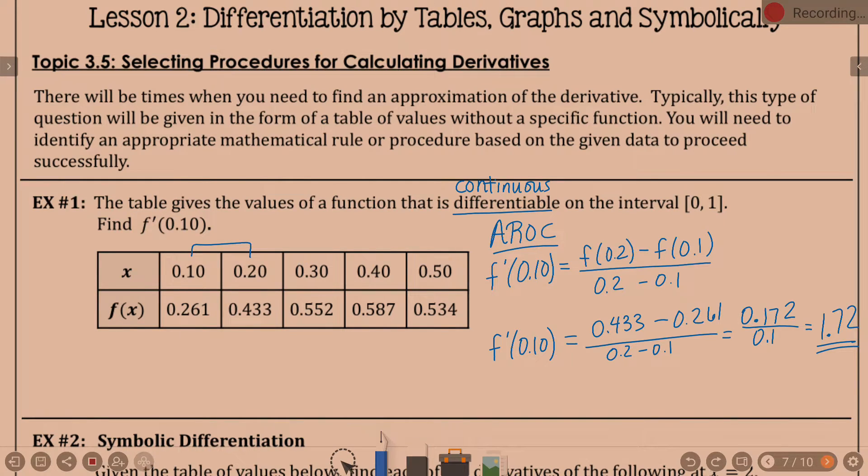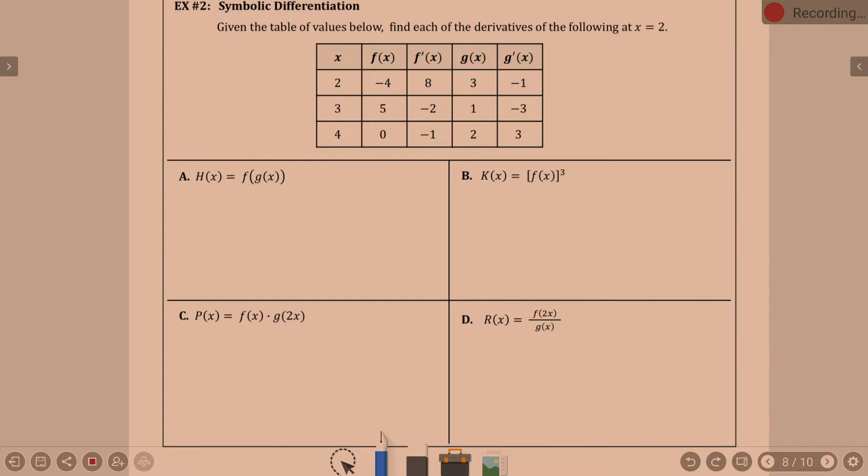Moving along. Given this table of values, find each of the derivatives of the following at x equals 2. So, all of these, we're finding it at x equals 2. So, like on a, we're going to be finding h prime of 2, eventually. But, so that's going to kind of be my second line. Before we can find h prime of 2, though, we need to have an equation for the derivative. We've already done this, though. We did this as part of our lesson yesterday. As I said, I feel like there's a lot of review in today's lesson.